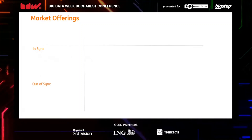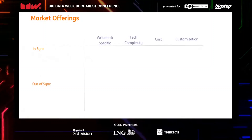In-sync means it can sit either on top of or really close to your existing IT stack or IT department — mostly for larger companies that already work with a vendor, have a dedicated stack, and large IT departments. Out-of-sync is mostly for smaller companies or those without a consistent stack. I've also tried to categorize them by whether they're writeback-specific, technical complexity, cost, and level of customization.